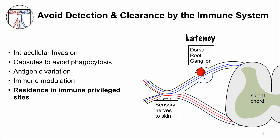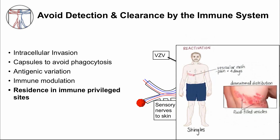However, viral replication can occur again — we call this reactivation. For varicella zoster virus, reactivation of the virus and travel to the skin via sensory nerves results in a dermatomal rash called shingles.